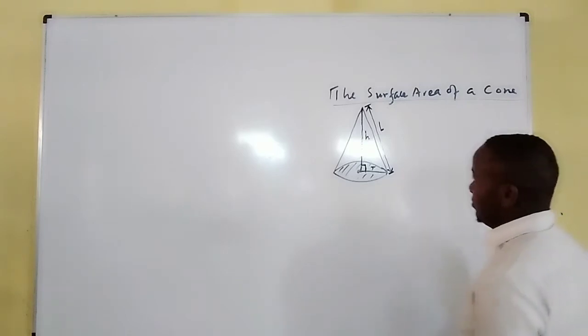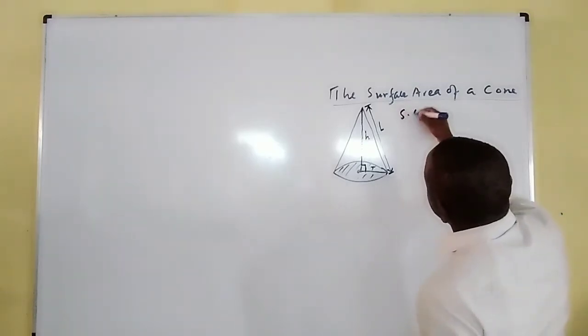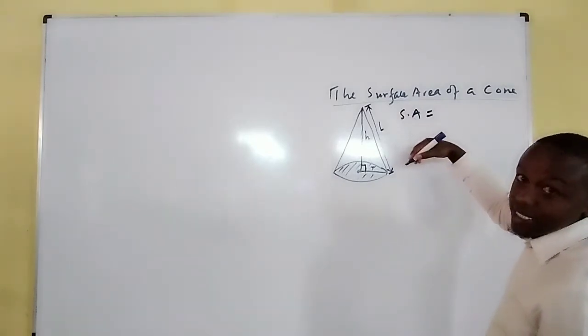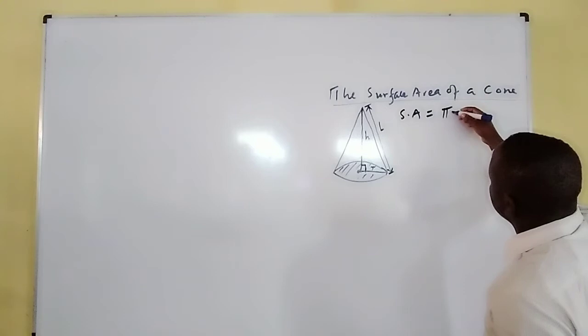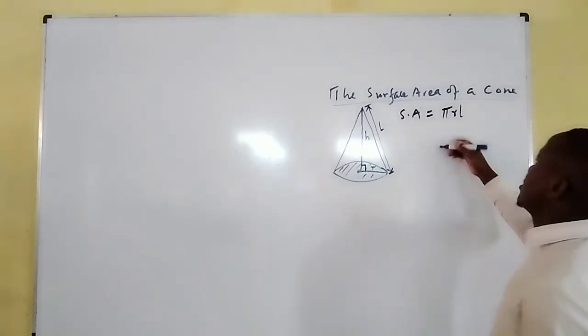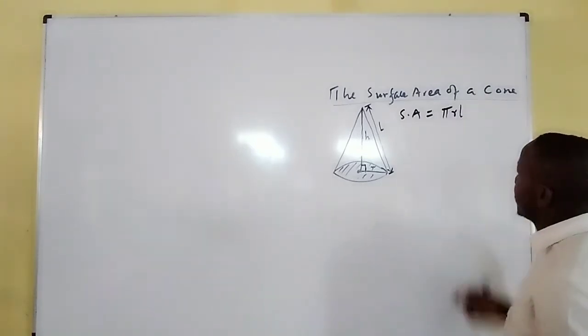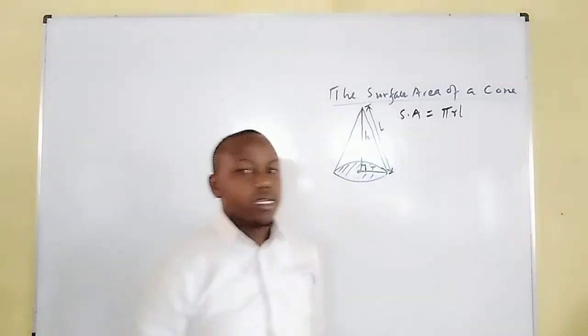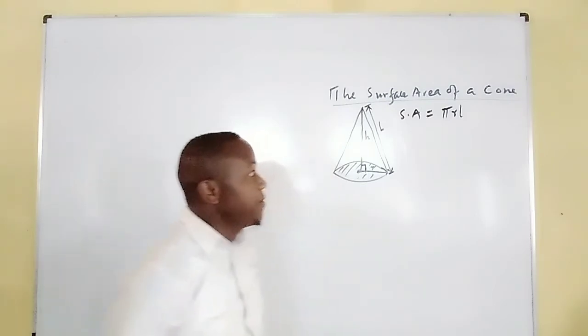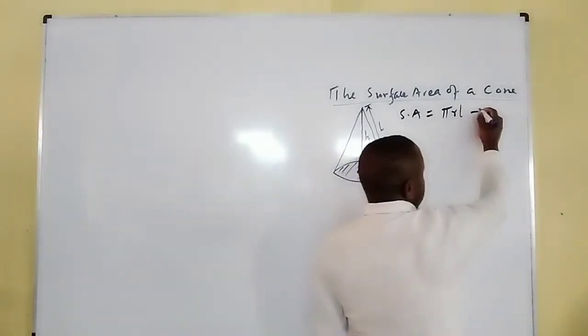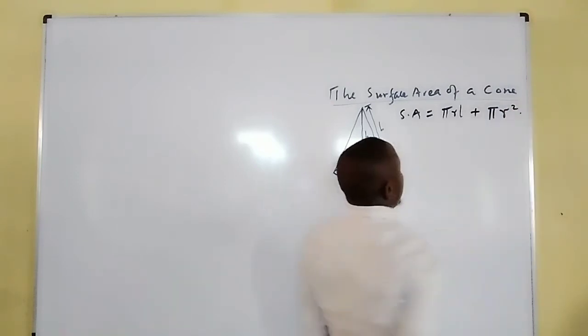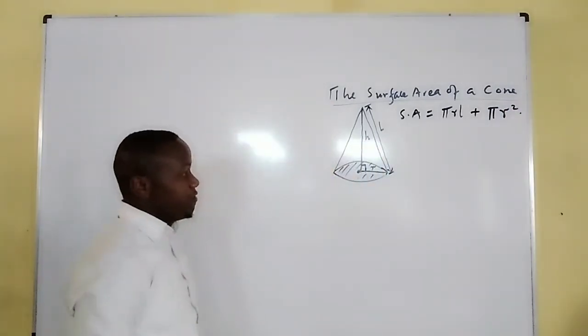Therefore, the surface area of a cone is given by the curved surface which is πrl - that's pi times radius times the sloping height. Then we have the base surface which is circular, and the area is given by πr². So for example, if you're told to find...